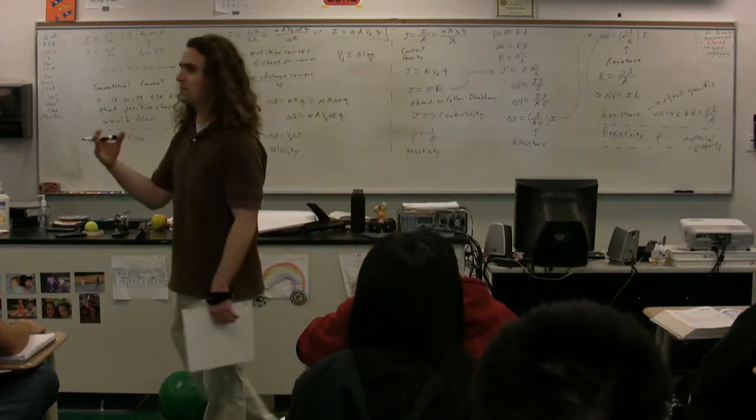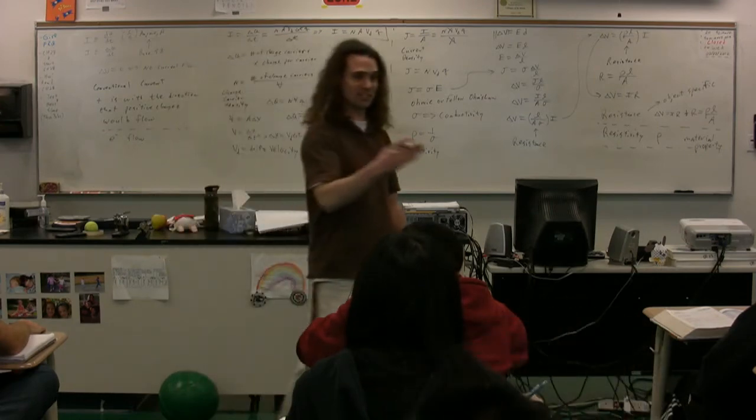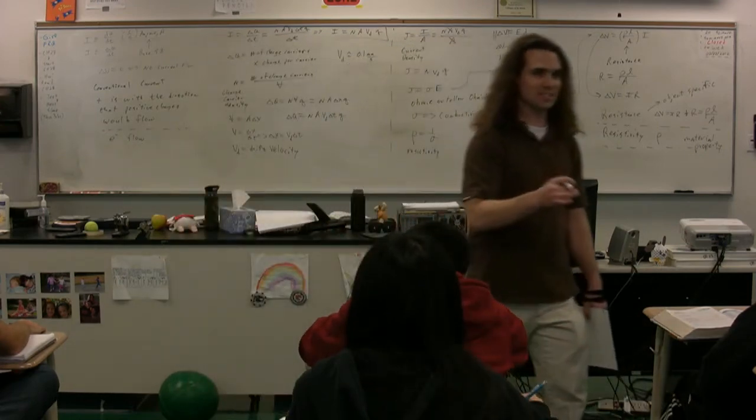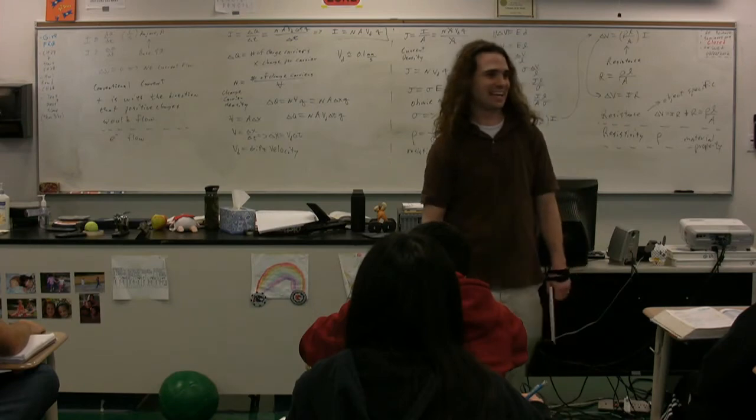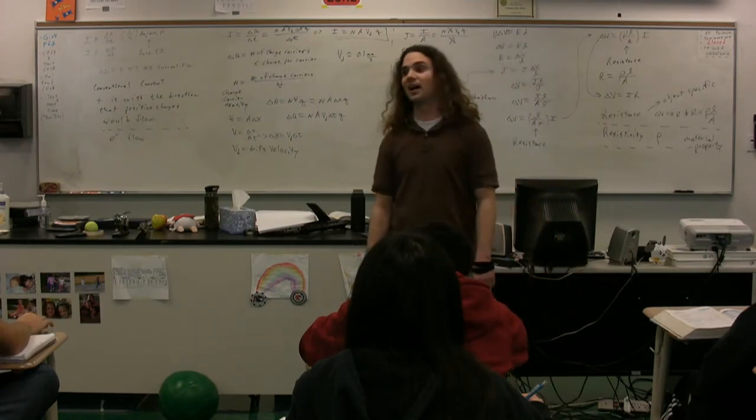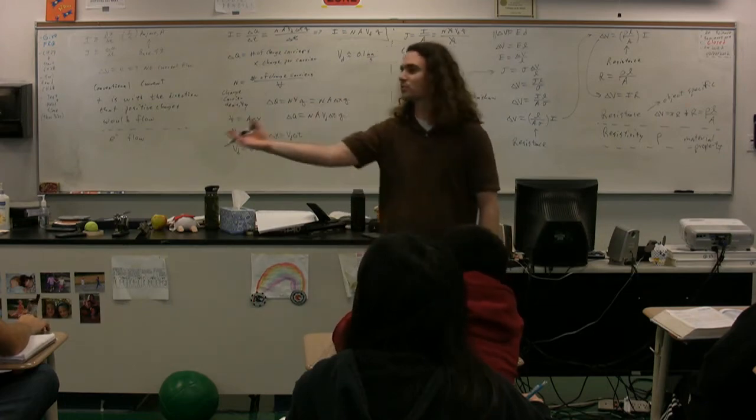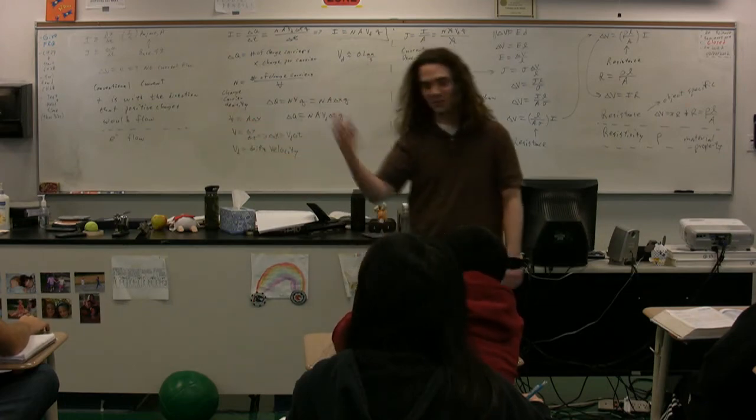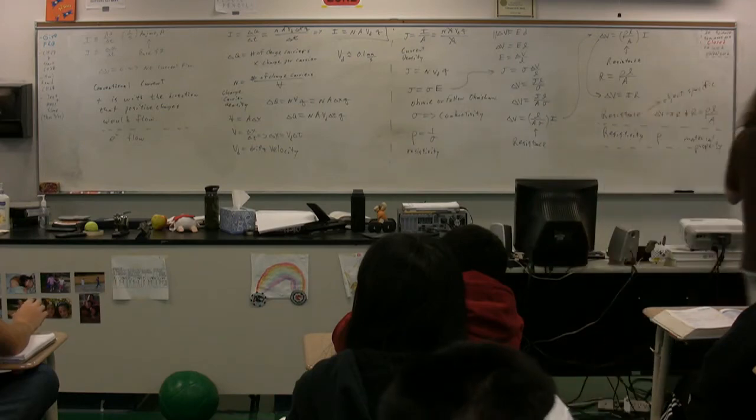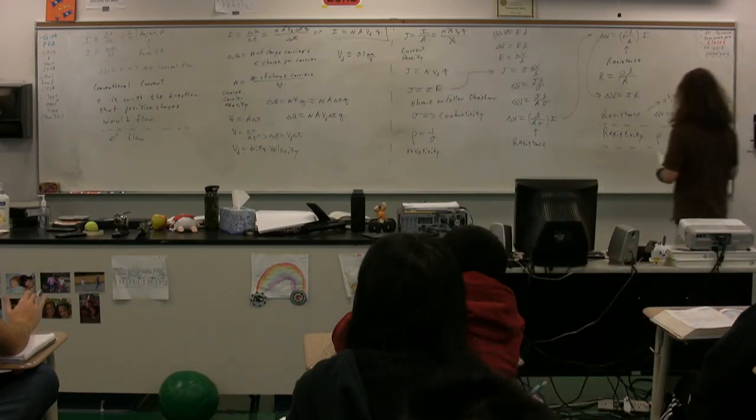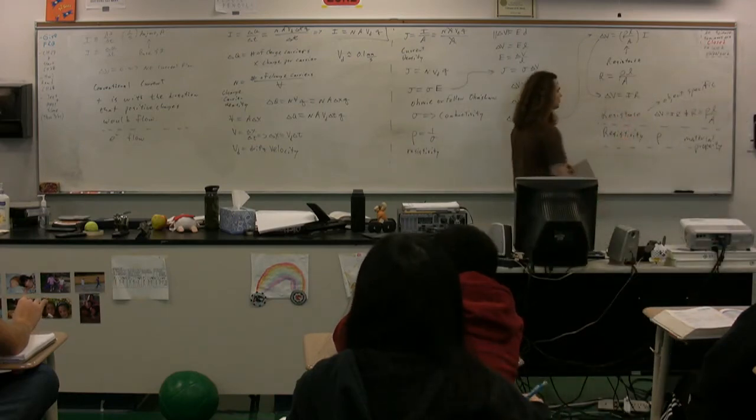So, resistance is object specific. It depends on the geometry of the object and whatever material you're talking about. So, you can have a resistance of a particular resistor. And if you have another resistor, it can have a different resistance, even if it has the same resistivity. What would make it so that two different resistors that have different resistances have the same resistivity? They're made of the same material. So, it's just one of those things that people often confuse the concept of resistance versus resistivity.